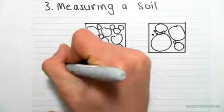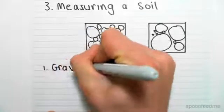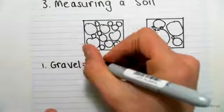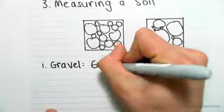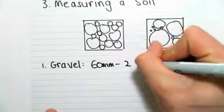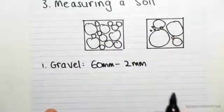The first one is gravel. Gravel has particle sizes from 60mm to 2mm in diameter. These are all in diameters.